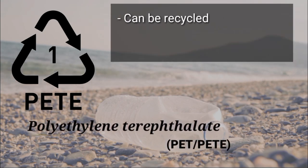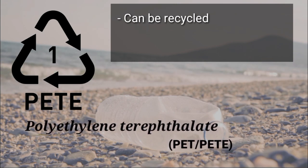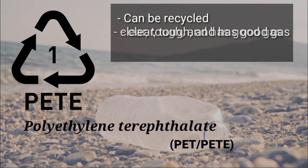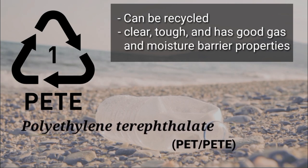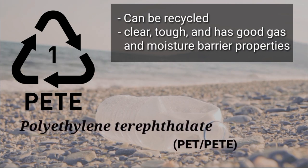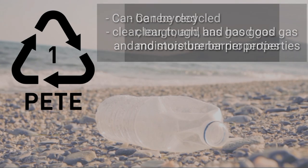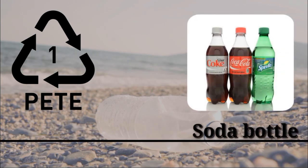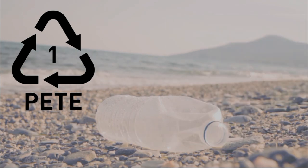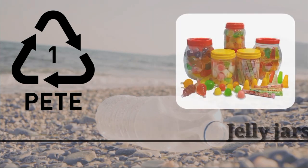PET is the most common and easily recycled plastic and the most commonly used plastic in the world. It is clear, tough, and has good gas and moisture barrier properties. This resin is commonly used in beverage bottles and many injection-molded consumer product containers. Examples include soda bottles, water bottles, and jelly jars.